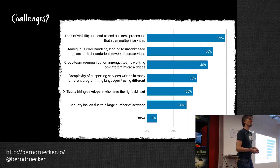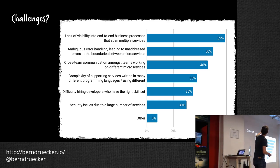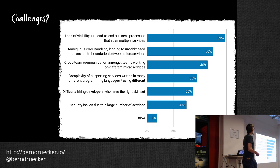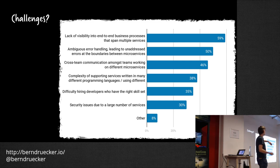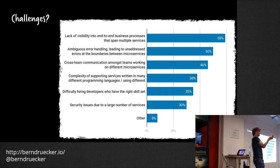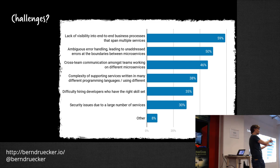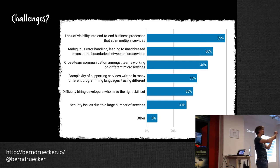In our survey, the top challenge people face is the lack of visibility into end-to-end business processes that span multiple services. The second challenge is ambiguous error handling leading to obscure errors at the boundaries between microservices. What we see is that complexity shifts away from the single service — which gets easier — and moves to the collaboration between services.